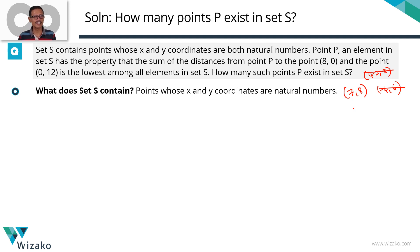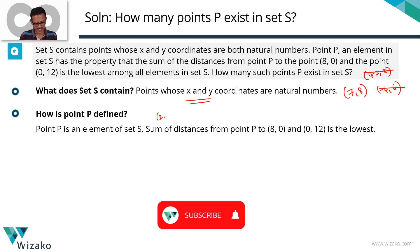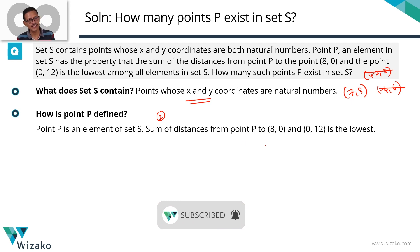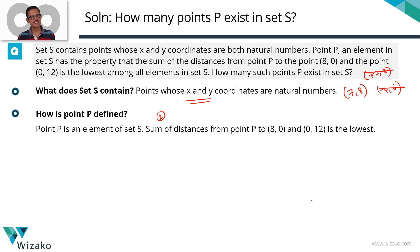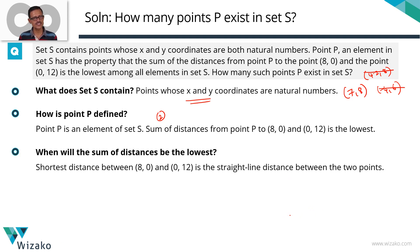Let's find out the definition of point P. Point P is an element in set S, which means its x and y coordinates are both natural numbers. It also satisfies the condition that the sum of the distances from point P to (8, 0) and (0, 12) is the lowest among all elements in set S. Let's understand when the sum of distances will be at its least.